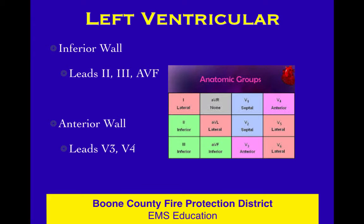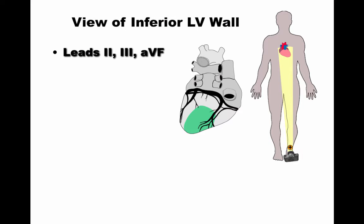Lead 2, 3, and AVF is inferior. V3 and V4 are the anterior walls. V1 and V2 are septal. The lateral wall has four cameras on it: Lead 1, AVL, V5, V6. You can have changes in more than one lead, which would indicate ischemia in more than one wall. Here's a look at the inferior wall — you see the camera mounted down at the foot looking up at the bottom, the inferior wall of the heart.